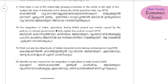The stagnation of Indian agriculture during the British period is mainly caused by the policies of the colonial government. Briefly explain those policies.